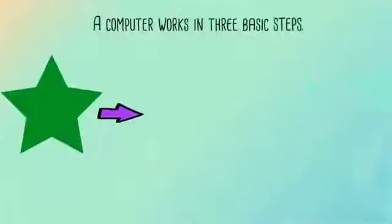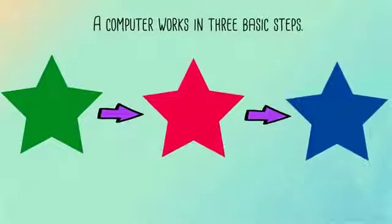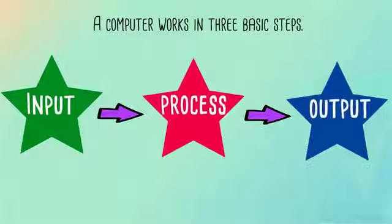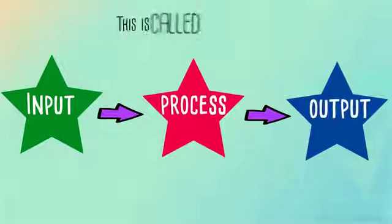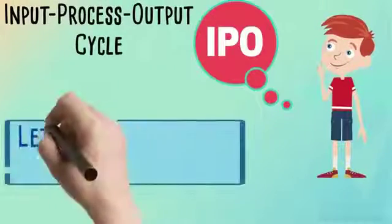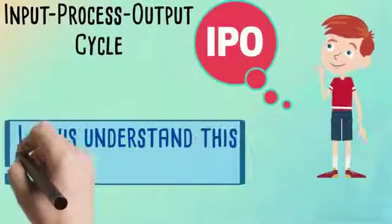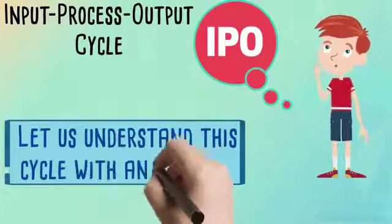A computer works in three basic steps: input, process and output. This is called the IPO cycle. Let's understand this cycle with an example.